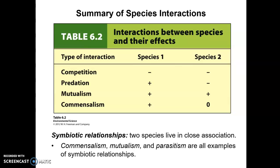An important example of a symbiotic relationship is lichen. Lichen consists of an algae and a fungus that live together in close association. The algae performs photosynthesis which provides food, and the fungus has a strong structure that traps water, benefiting the photosynthetic algae. They both benefit and are always found in close association.